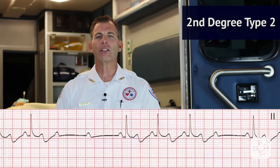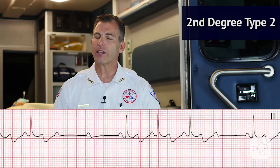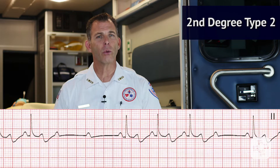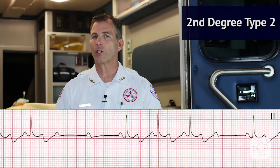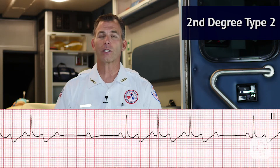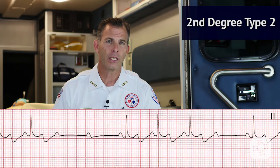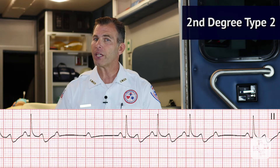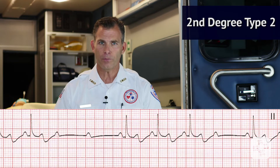The third type is called second degree Mobitz type 2 and usually occurs when the heart block is below the AV node. Characteristically, the ECG appears to have intermittent blocks where some P waves do not have QRS complexes following. There is no elongation of the P to R interval.